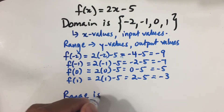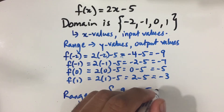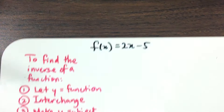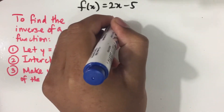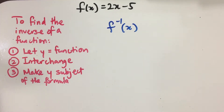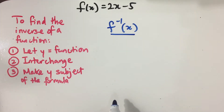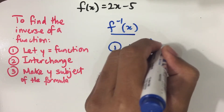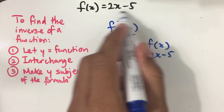So these are your output values, or the range. The range is -9, -7, -5, and -3. Now the next question asks us to find the inverse of a function, written as f⁻¹(x). The first step is to let y equal to f(x), so y = 2x - 5.